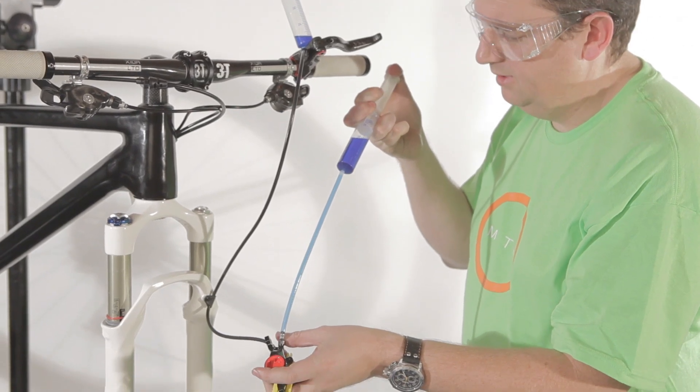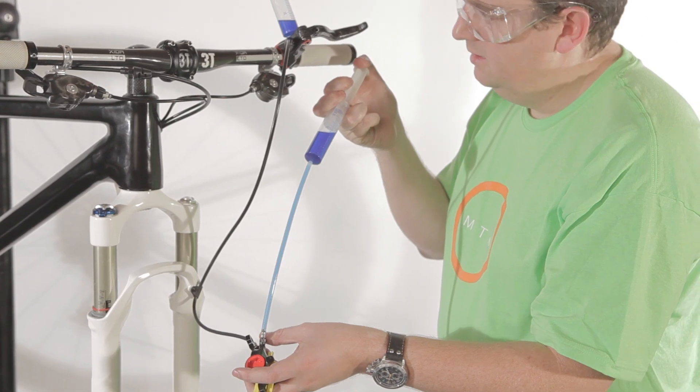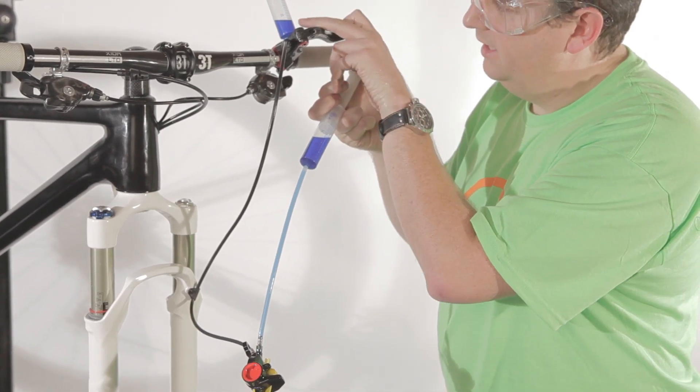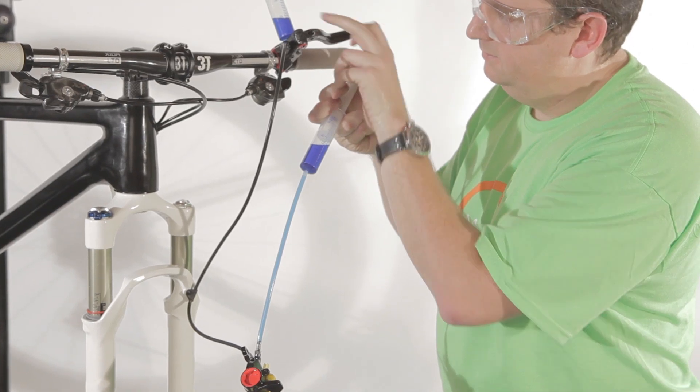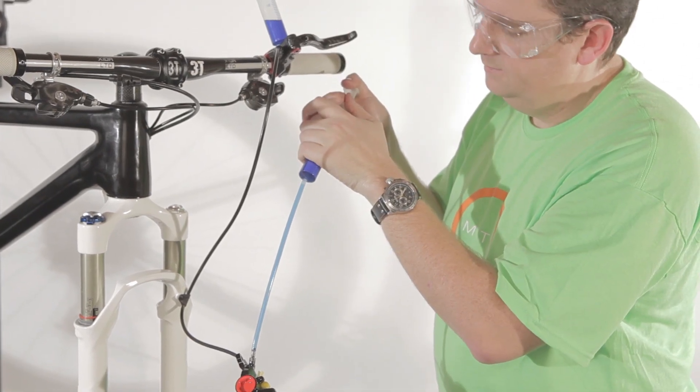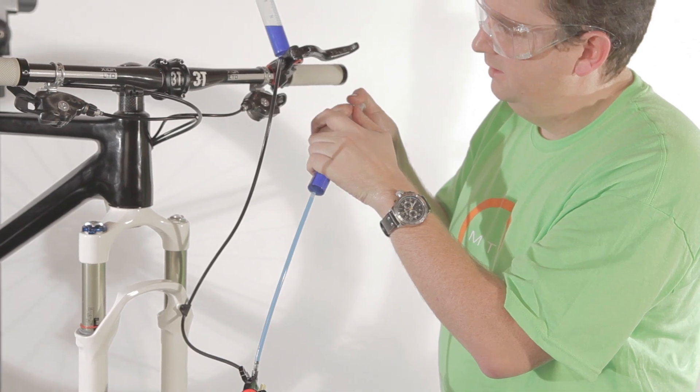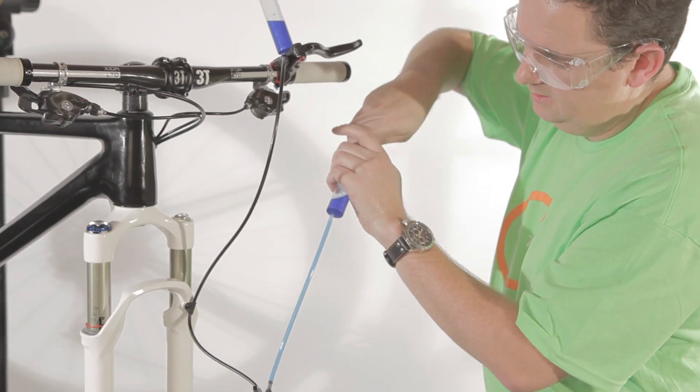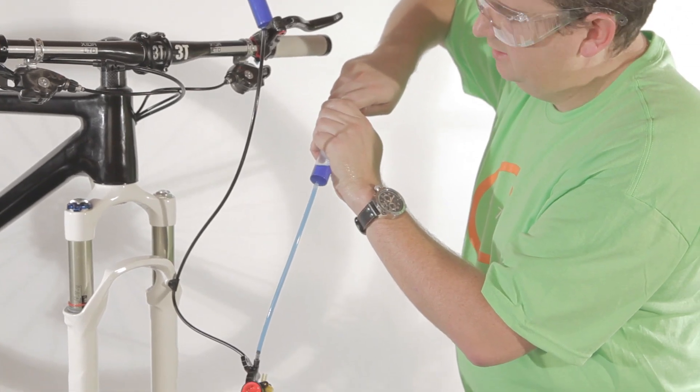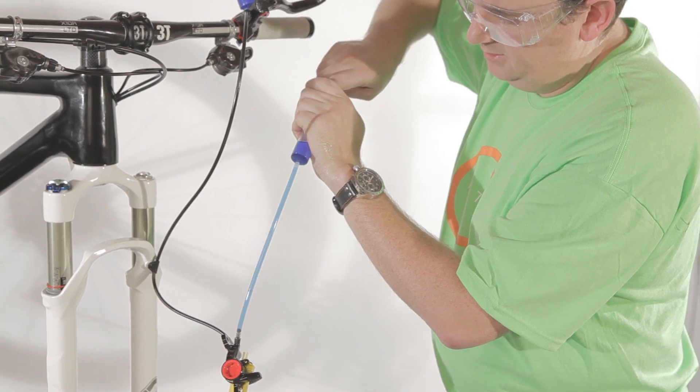So we are slightly pushing oil now. Very gently. And you will see that the oil level will rise on the lever. Just want to make sure it is completely filled with oil. Now I am going to create a vacuum, by pulling at the plunger. You see some air bubbles escaping.